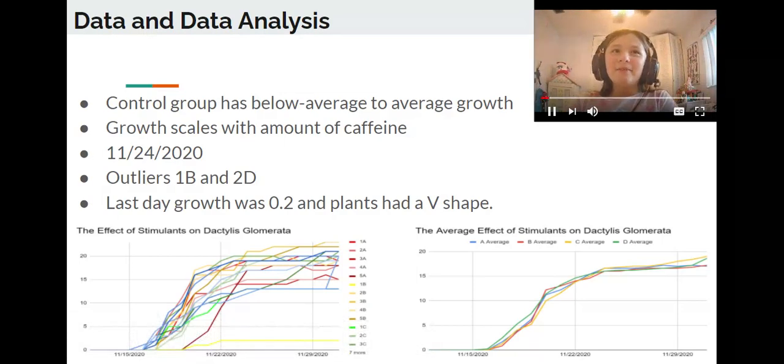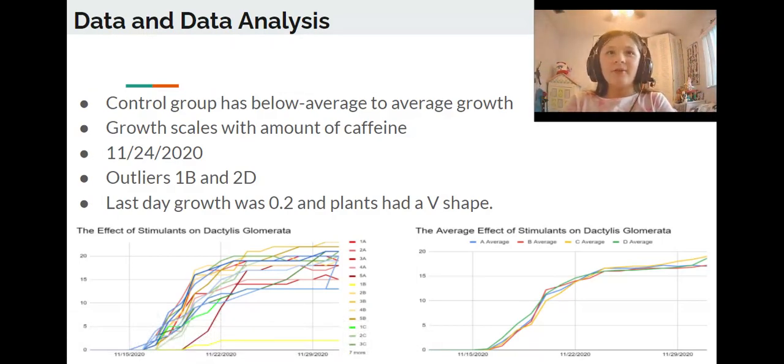Data and Data Analysis. Results show that Dactylis glomerata plants 1A through 5A, the control group, have below average to average growth, and that growth scales with the amount of caffeine.